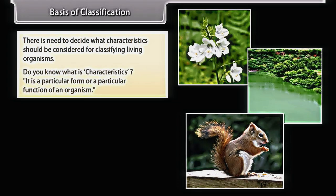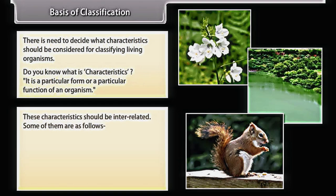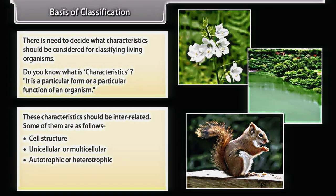A characteristic is a particular form or a particular function of an organism. These characteristics should be interrelated. Some of them are: cell structure, unicellular or multicellular, autotrophic or heterotrophic, level of organization, and body design.